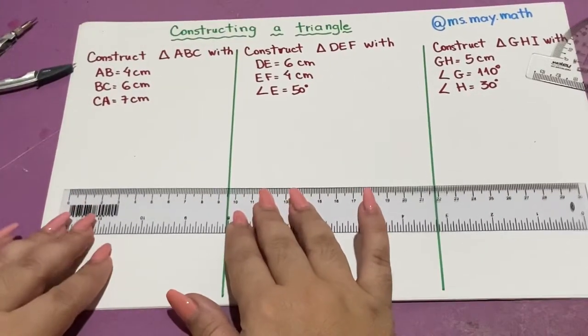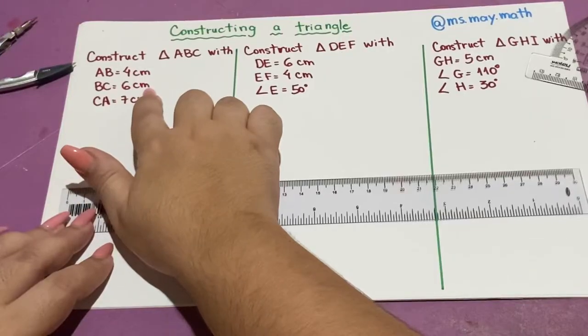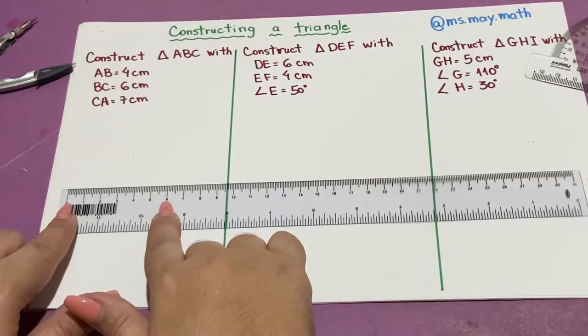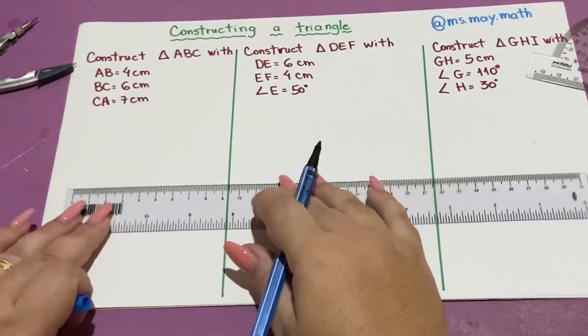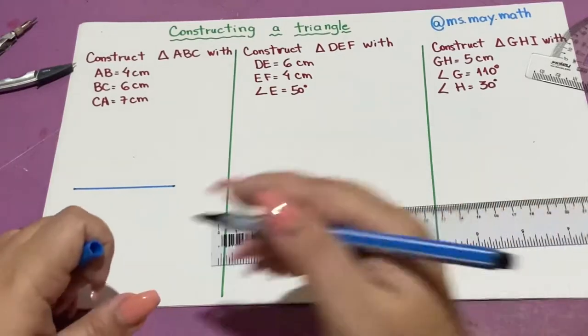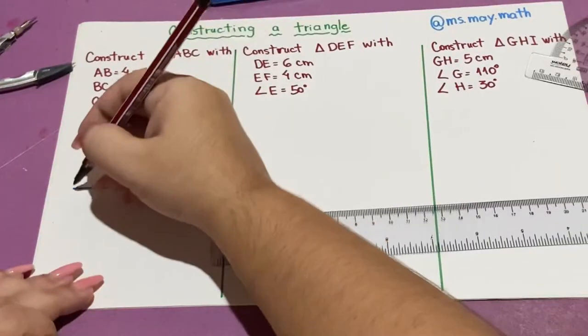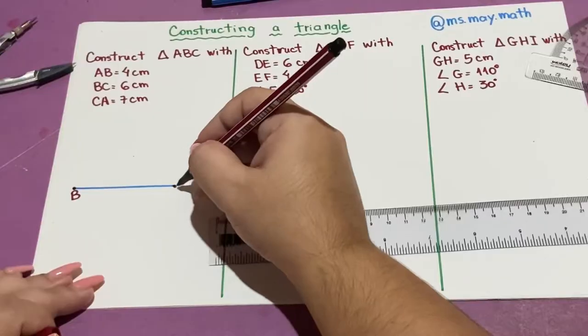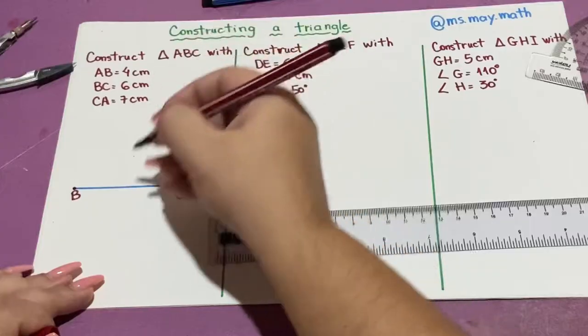First step is to build one of the sides. I'm going to choose the 6 centimeters. So I'm going to measure on the ruler 6 centimeters, and label the parts of the triangle. This will be point B, and this will be point C, because 6 centimeters is my side BC.